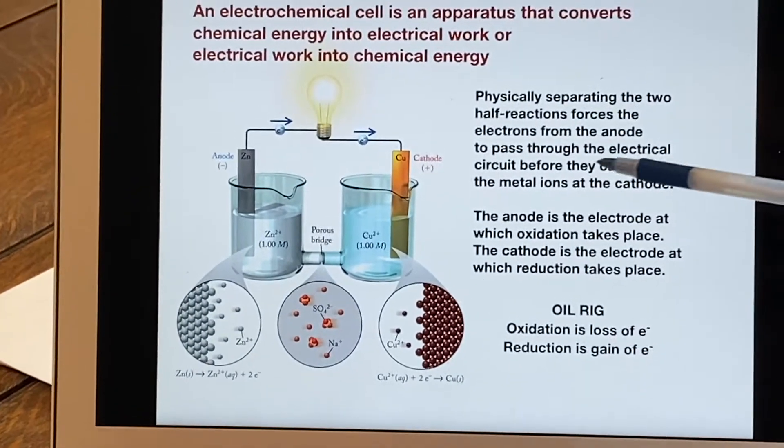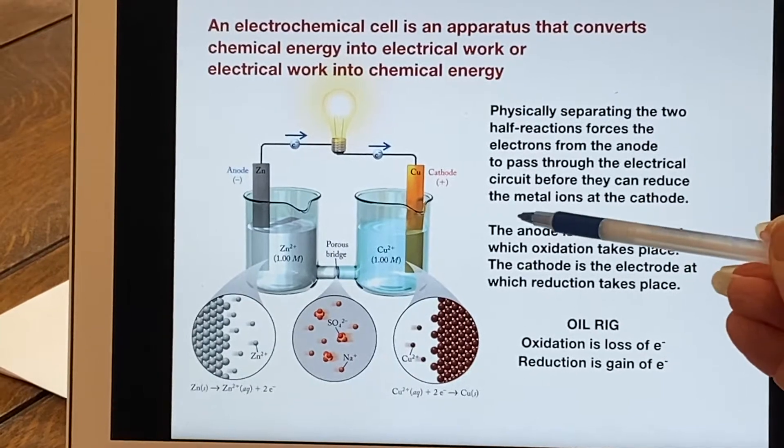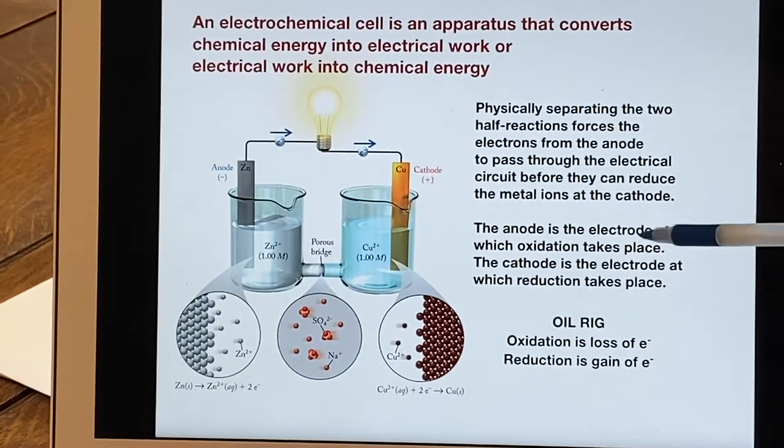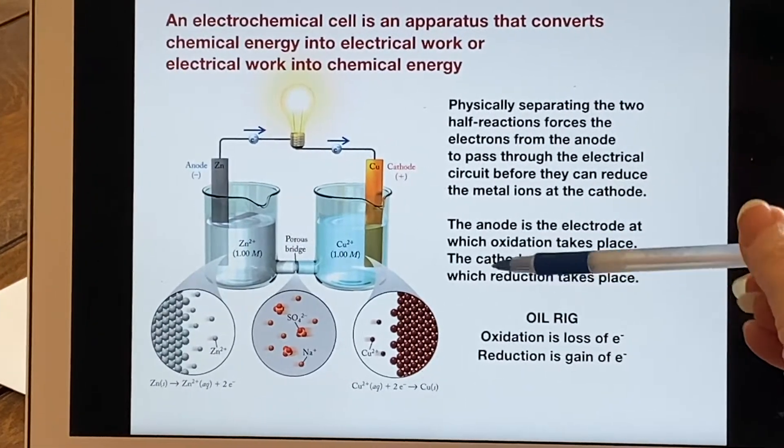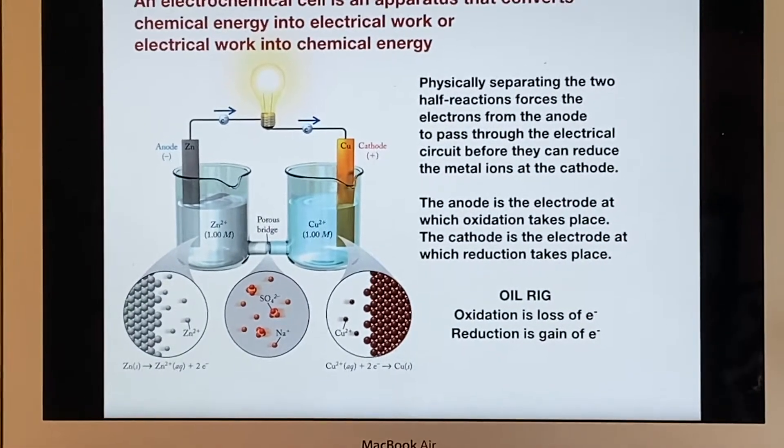We can say the anode is where the oxidation takes place. Notice this is an A, that's an O, they're both vowels. The cathode is where the reduction takes place. They're both consonants. This helps us remember it because it's pretty new stuff to all of us.